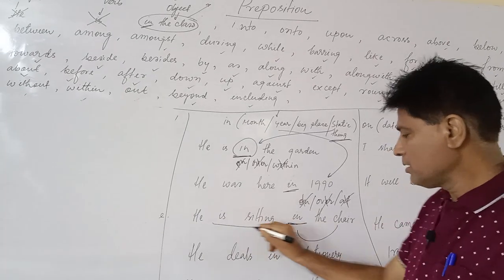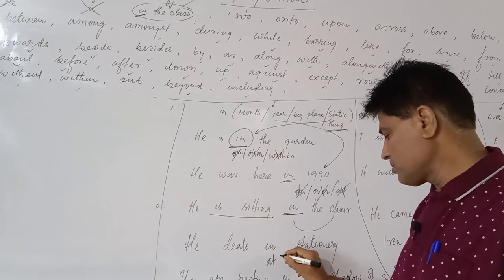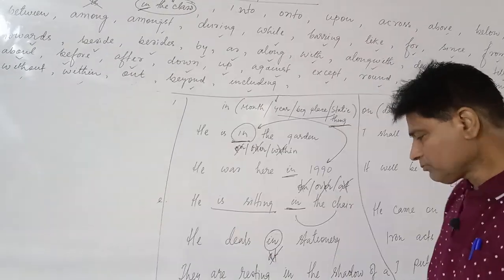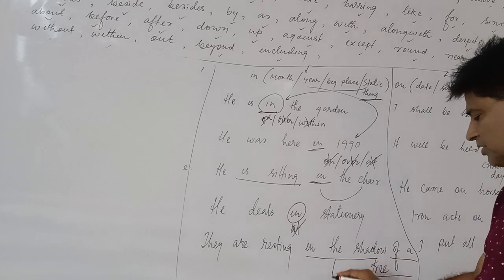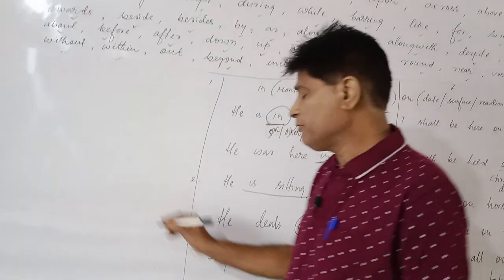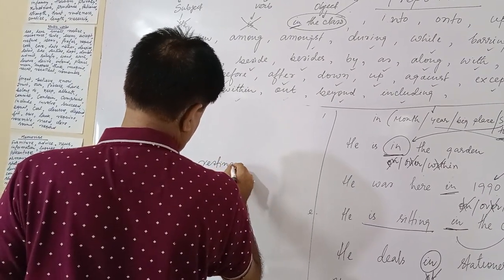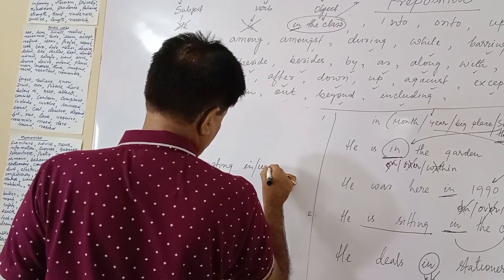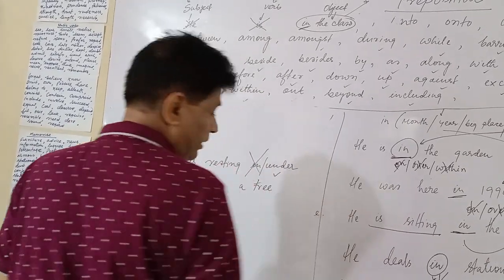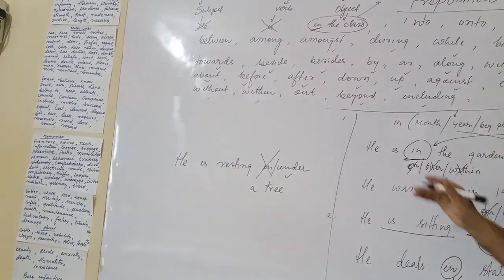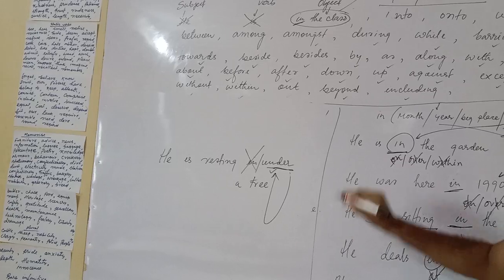He deals in stationary, not at stationary will be wrong, in will be correct. They are resting in the shadow of a tree. In the shadow will be appropriate here. But if you write he is resting under a tree, in that condition, under will be correct. It defines place. In the case of definite place, you are using under, under will be correct, in will not be correct.